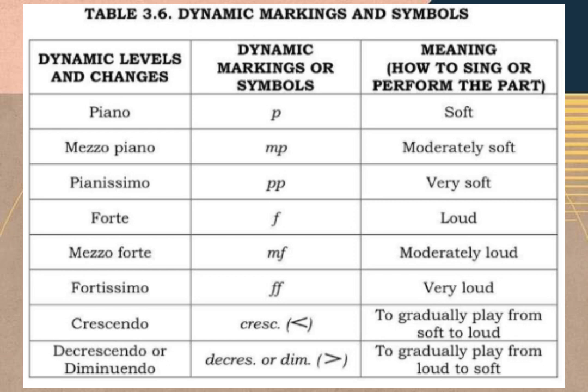Fourth, we have forte. Its marking or symbol is F, and its meaning is loud. Fifth, we have mezzo forte. Its marking or symbol is MF, and its meaning or how to sing or perform the part is moderately loud.